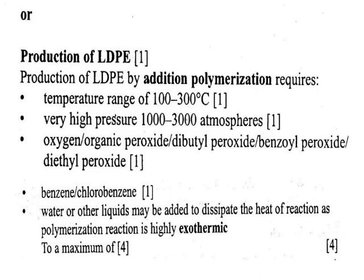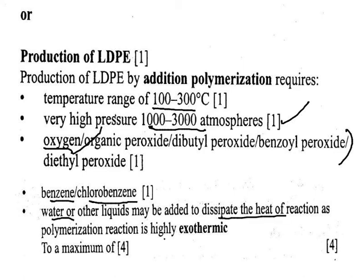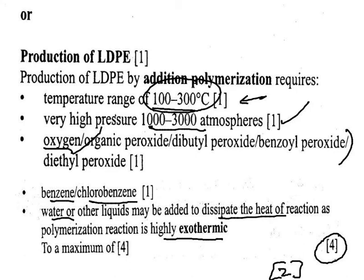For low density polyethene: temperature range 100 to 300 degrees centigrade, and on this occasion a very high pressure. Oxygen is the easiest initiator to remember, though others are accepted. The solvent is either benzene or chlorobenzene, and water is used to dissipate the heat since the polymerisation is a very exothermic process and you want to maintain the temperature in that range. Key marks: the temperature, the high pressure, the solvent, the use of oxygen, and the use of water to dissipate the heat — plus two marks for quality of written communication.